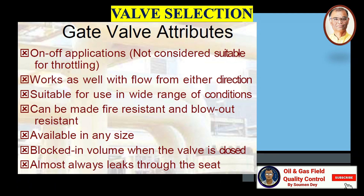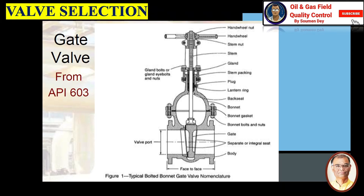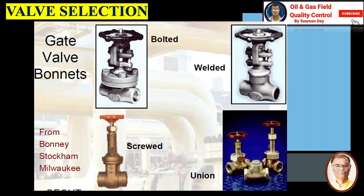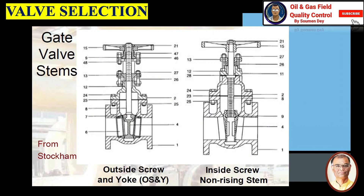So for gate valve selection, we use it where serious isolation is required. You can see a typical bolted bonnet gate valve nomenclature here. A vertical sliding gate is used for isolation — this valve is termed a gate valve. Gate valve bonnets you can see include bolted, welded, screwed, and union types.